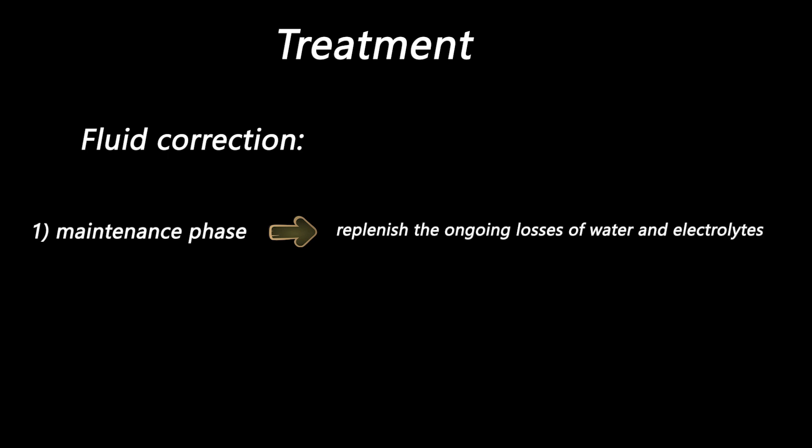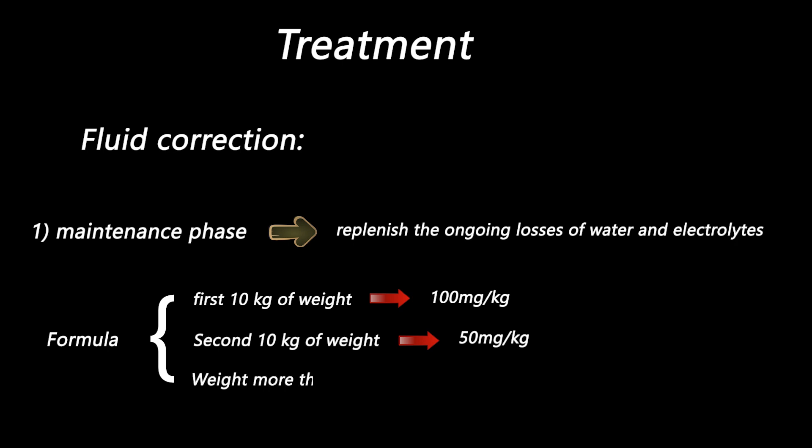For calculation of maintenance volume, we use a formula. For the first 10 kg of weight, 100 mg of fluid is needed for each kg. For the second 10 kg of weight, 50 mg of fluid is needed per each kg. And if the weight of the child is more than 20 kg, we give 20 mg of fluid for every 1 kg.